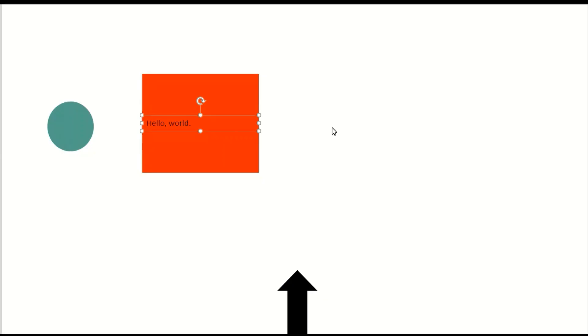Text frame Hello World. Right arrow. Rectangle obscured. Oval. 164 points from top slide edge. 297 points from bottom slide edge.